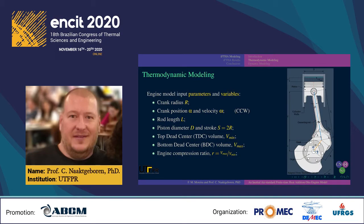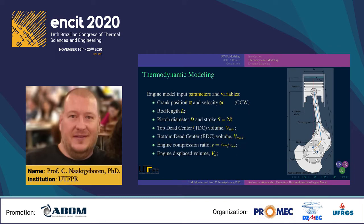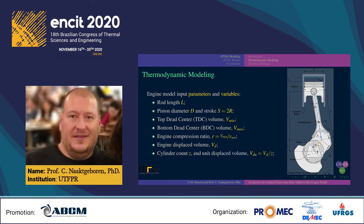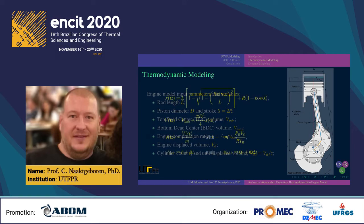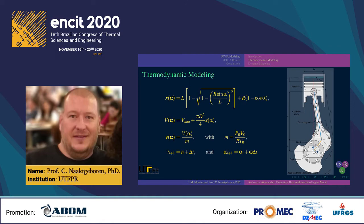On the thermodynamic modeling, engine model input parameters and variables include the crank radius r, the crank angular position alpha and angular velocity omega (counterclockwise increasing), the rod length l, the piston diameter d and stroke s equal to 2r, the top dead center volume v_min, the bottom dead center volume v_max, the engine compression ratio r equal to v_max over v_min, the engine displaced volume v_d, the cylinder count z, and the unit displaced volume v_du equal to v_d over z. The instantaneous piston position x is a non-linear function of crankshaft angle alpha, affecting the working fluid volume V and the specific volume v.